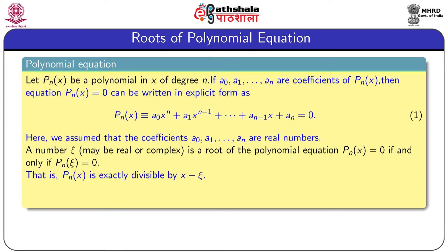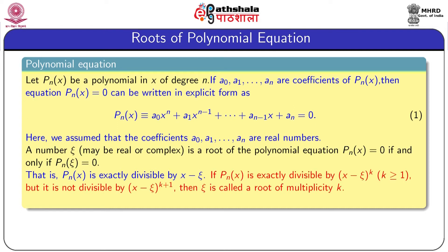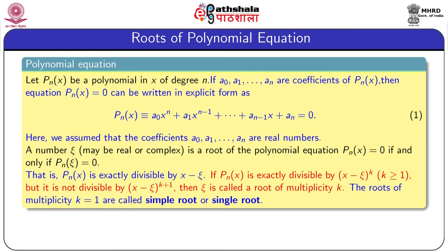If ψ is a root of P_n(x) = 0, then P_n(x) is exactly divisible by (x − ψ). If P_n is divisible by (x − ψ)^k but not by (x − ψ)^(k+1), where k ≥ 1, then ψ is called a multiple root with multiplicity k. If k = 1, the root is called a simple root or single root.